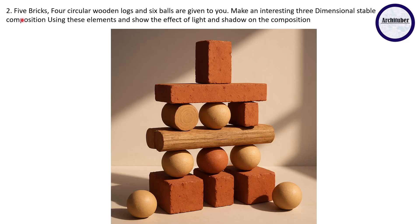The second 3D composition question: five bricks, four circular wooden logs, six balls are given to you. Make an interesting three dimensional stable composition using these elements and show the effect of light and shadow on the composition. See how AI has generated such a beautiful stable composition. Let's calculate - this is one wooden log, second, third. I cannot see the fourth one, but instead of this brick you can add a wooden log over here.